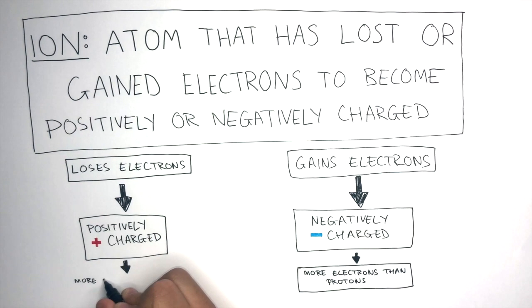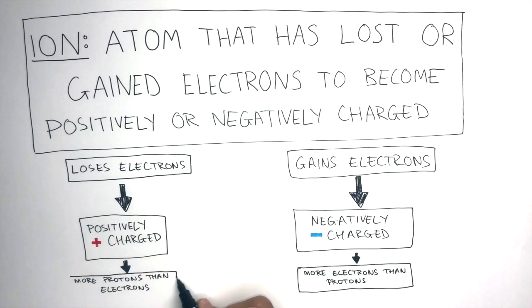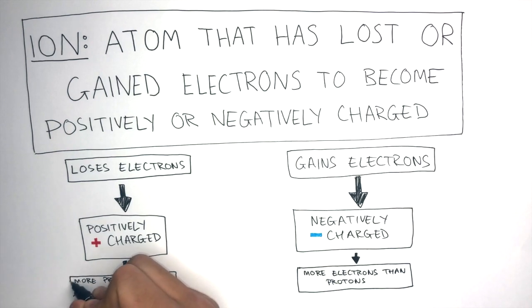A positively charged ion will have more protons than electrons. We call these cations. A cation is a positively charged ion.